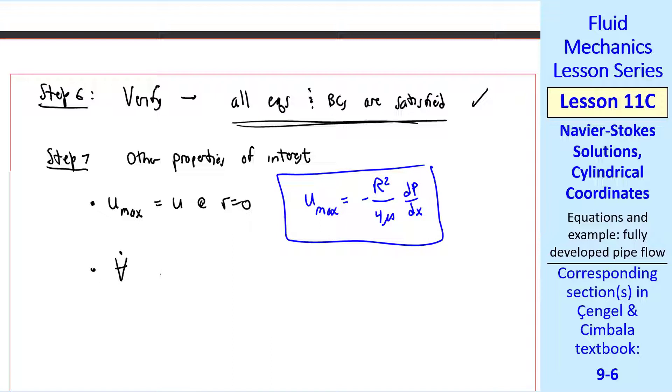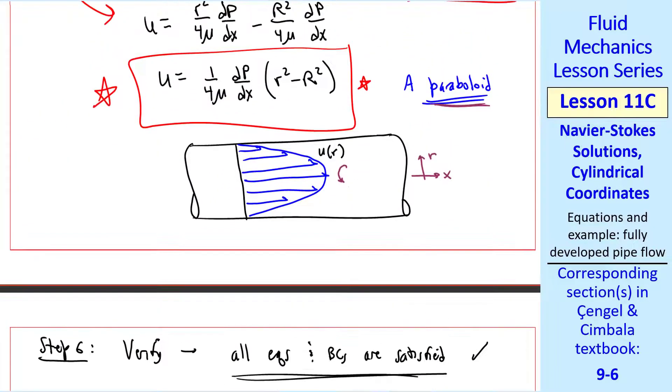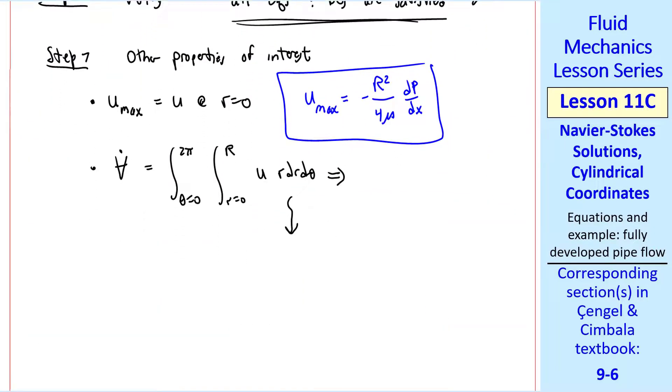We can also calculate the volume flow rate. We do that by integrating theta from 0 to 2π and integrating from r equals 0 to capital R of u times r dr dθ. Again, we plug in our u from up here without going through all the algebra. We get V̇ is minus πR⁴ over 8μ dp/dx. Again, this is a positive term because dp/dx is negative.